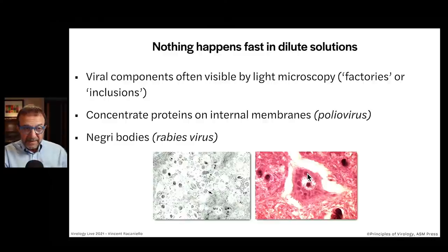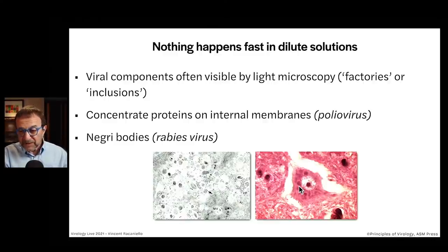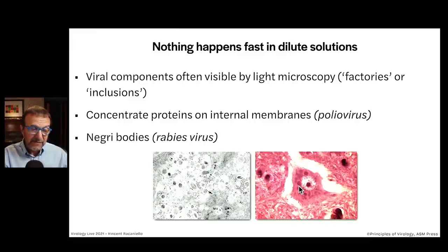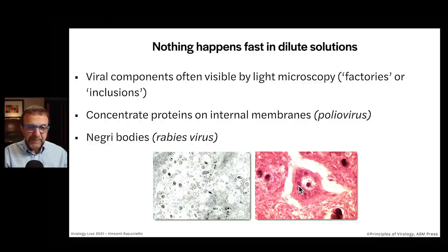If you didn't know, you could look at these inclusions and identify rabies virus, because some of these inclusion bodies and factories are quite specific for at least the family of viruses. So we concentrate things to make reactions go more efficiently.